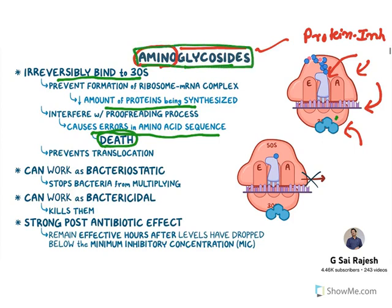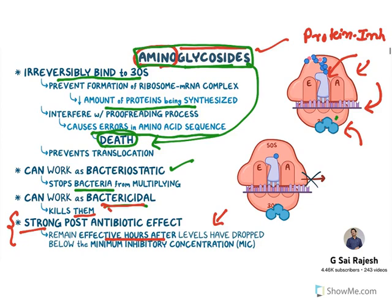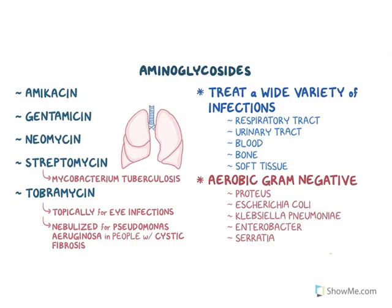Usually protein synthesis inhibitors are bacteriostatic in nature, but aminoglycosides can also cause death, hence they are considered bactericidal — they have both features. They can work as bacteriostatic by stopping bacteria from multiplying, and also as bactericidal by killing them. One more important feature is they have a strong post-antibiotic effect, meaning they remain effective even hours after antibiotic levels drop below the minimum inhibitory concentration.